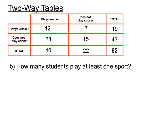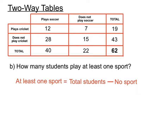These are typical of the questions you get in this topic. How many students play at least one sport? The system we could use here: at least one sport equals the total number of students minus the number of students who don't play either sport. The total students from the previous question was 62.